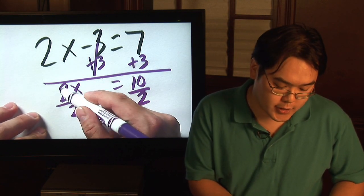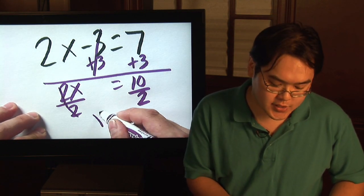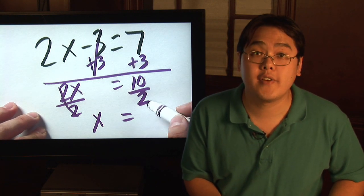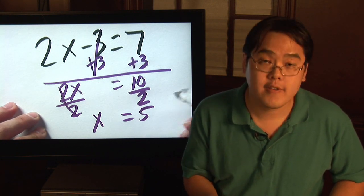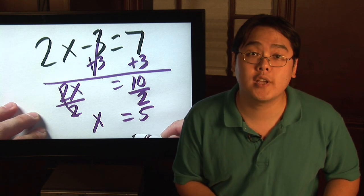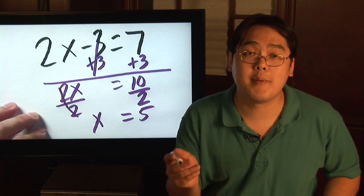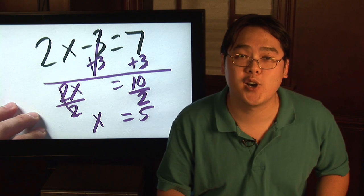So as a result, 2 divided by 2 completely cancels. You have x, and 10 divided by 2 is going to give you 5. So that missing answer that you're looking for is 5. So I'm Jimmy Chang, and that's an introduction on how to solve an equation.